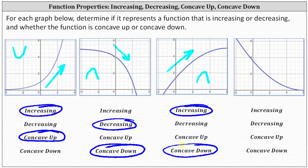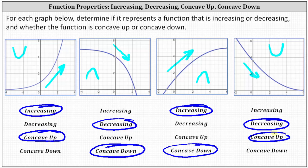For our last function, from left to right the graph is going downhill. The graph is in the shape of the left side of an upward-facing cup, indicating the function is concave up. This function is decreasing and concave up.